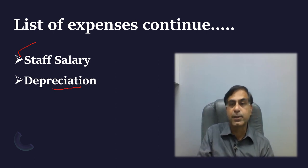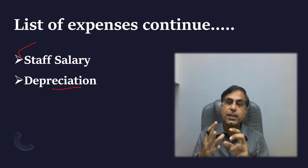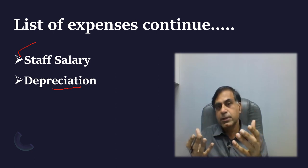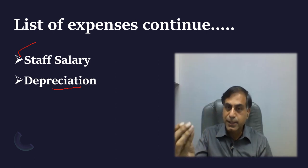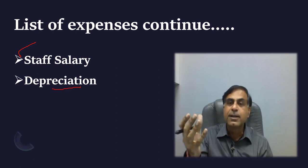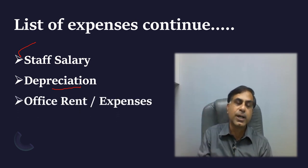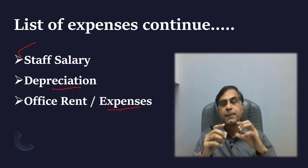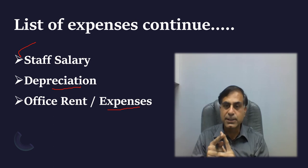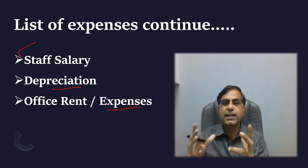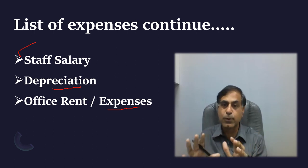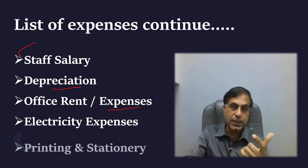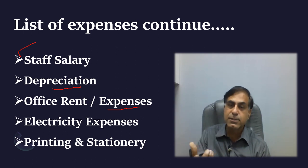Depreciation is a very significant issue. If you are using a laptop, mobile, computer, or table mainly for conducting F&O transactions on a day-to-day basis, then depreciation on such items can be claimed — your CA would help you with that. If you are conducting all these activities through a business premise, you may also be incurring expenses like tea, coffee, lunch, or snacks — you can claim those expenses provided you can establish them. Similarly, electricity expenses for the business premise and any printing and stationery related expenses can also be claimed.